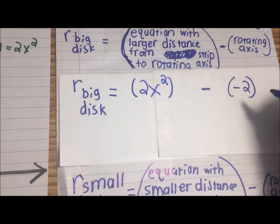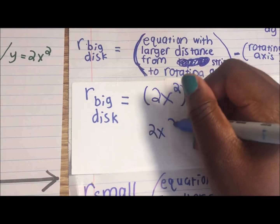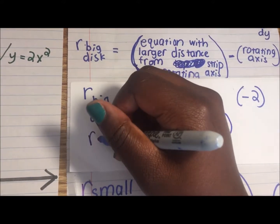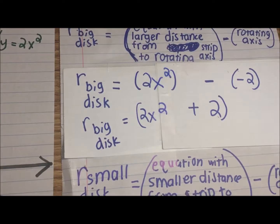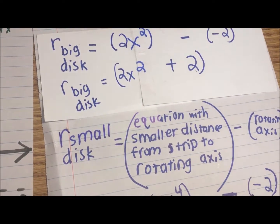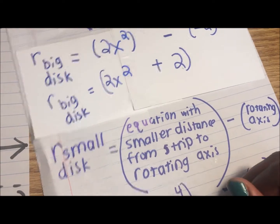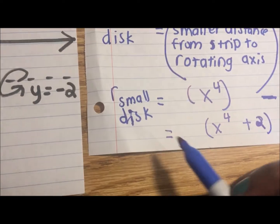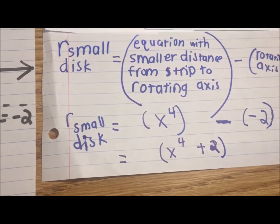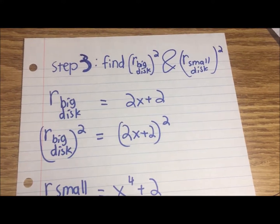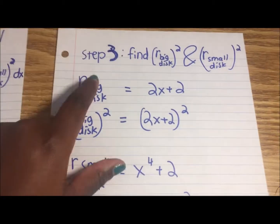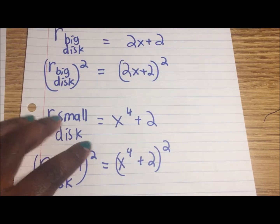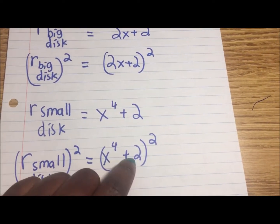Since minus minus equals plus, R big disk simplifies to 2x squared plus 2, and R small disk simplifies to x to the 4th plus 2. For step 3, we find R big disk squared and R small disk squared. R big disk squared is (2x squared plus 2) squared, and R small disk squared is (x to the 4th plus 2) squared.